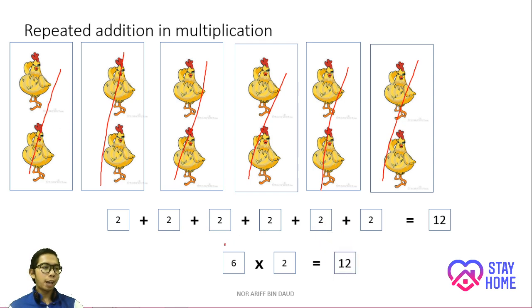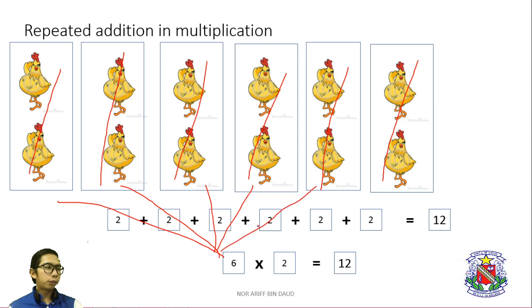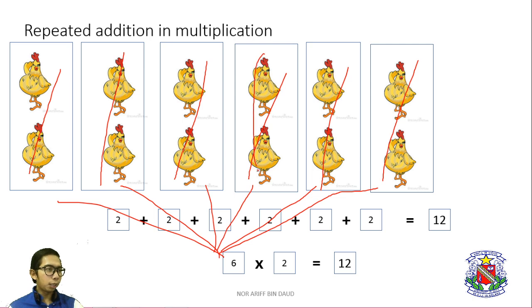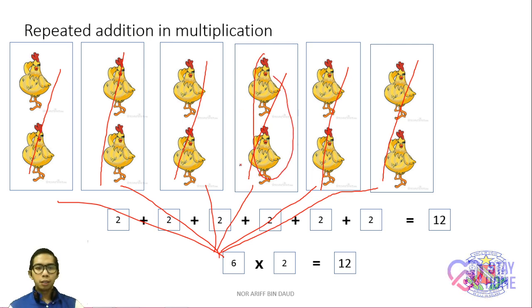6 stands for 6 groups of chicken, and 2 means 2 chickens in each group.